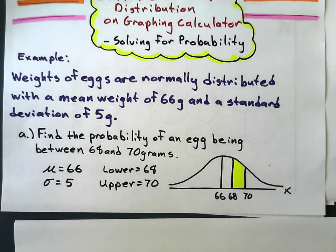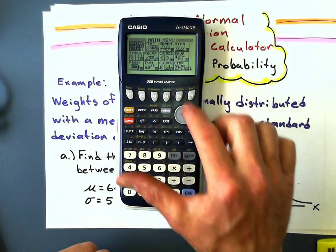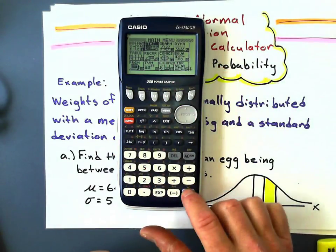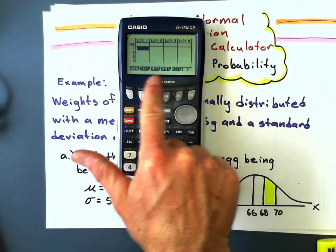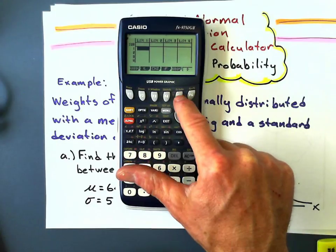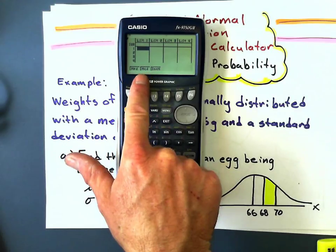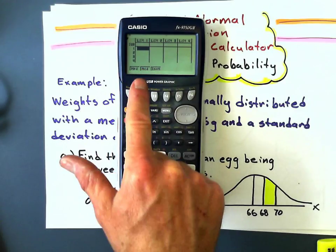So in the graphics calculator, here's how I do it. First, turn it on and I'm going to scroll over to the stats menu, press execute, I'm going to go over to distribution, press F5, and then I go over to normal for normal distribution.